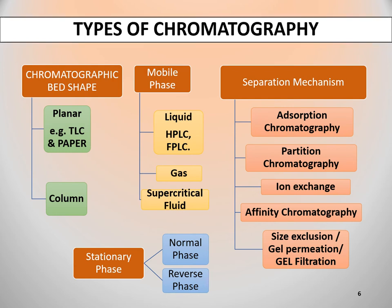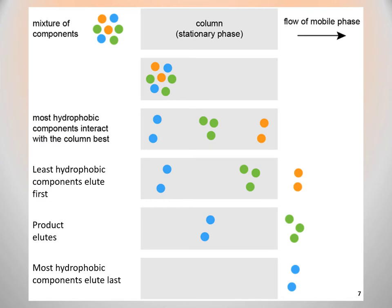On the basis of nature of stationary phase, we can classify chromatography into two types: normal phase and reverse phase. If the stationary phase is polar, chromatography is called normal phase. If the stationary phase is non-polar, the chromatographic technique is called reverse phase chromatography. In this case, as the stationary phase is non-polar, the non-polar or hydrophobic components of the mixture will have a strong affinity towards the stationary phase, and the polar components will be eluted first — they will leave the column first.